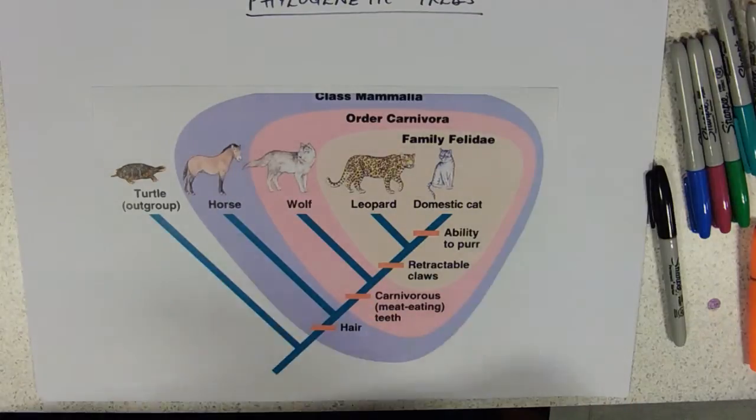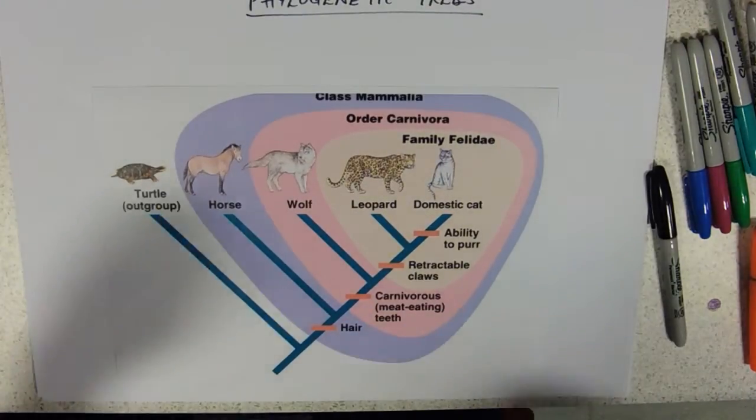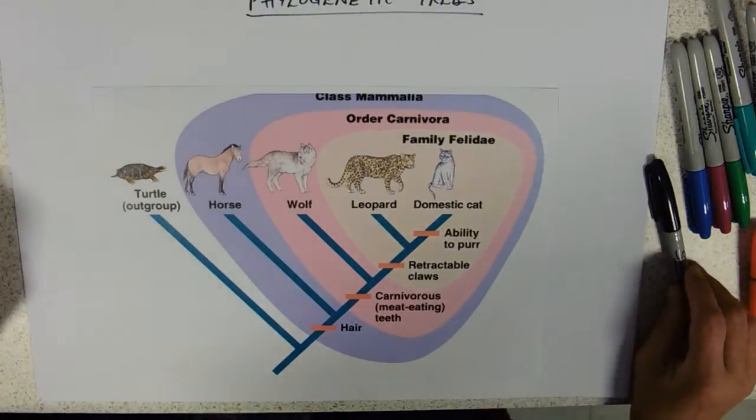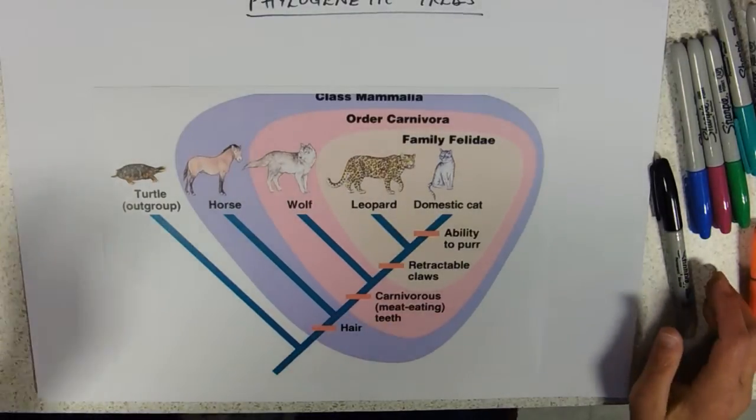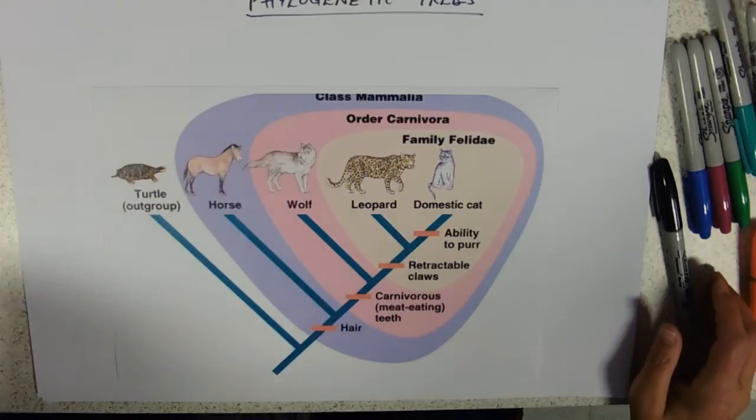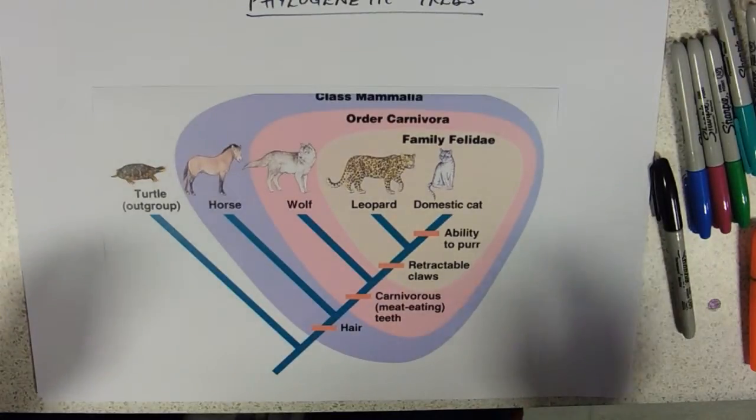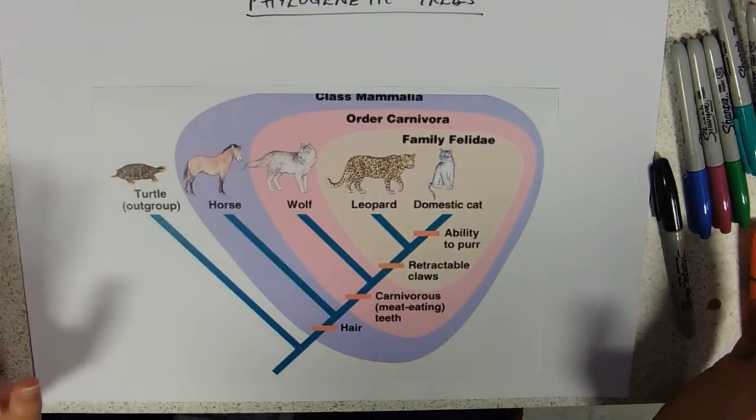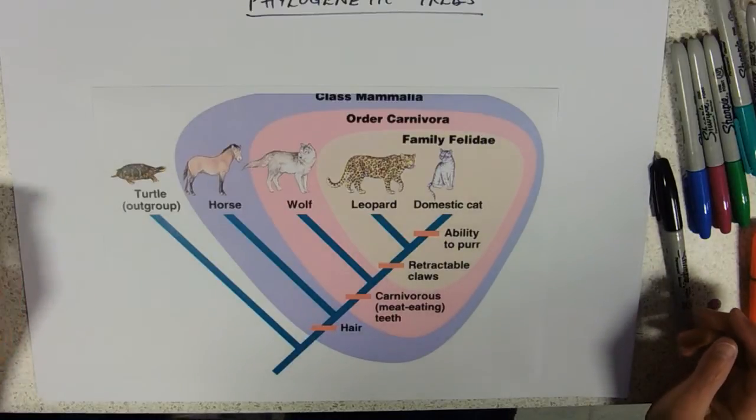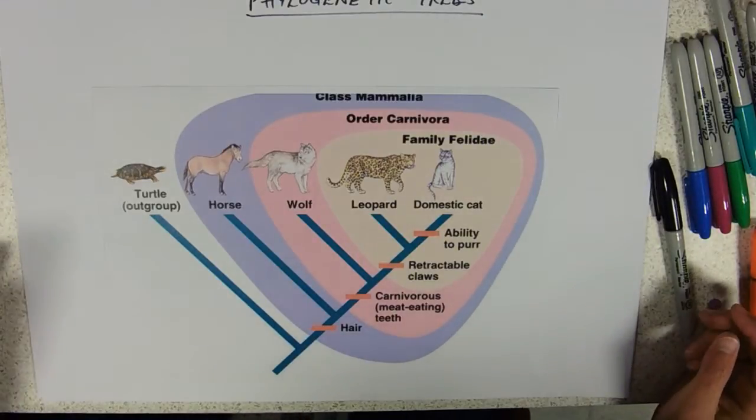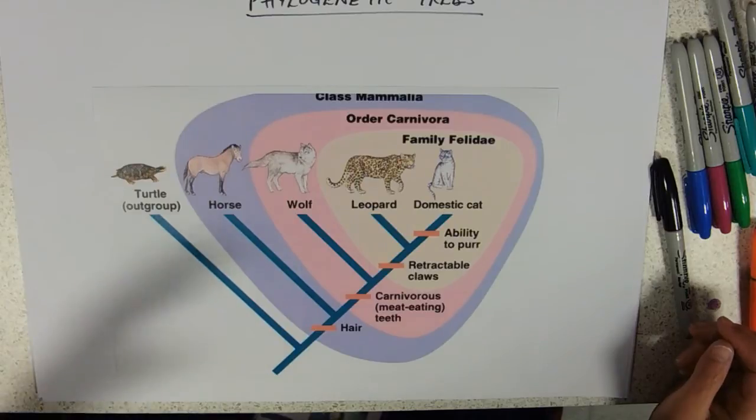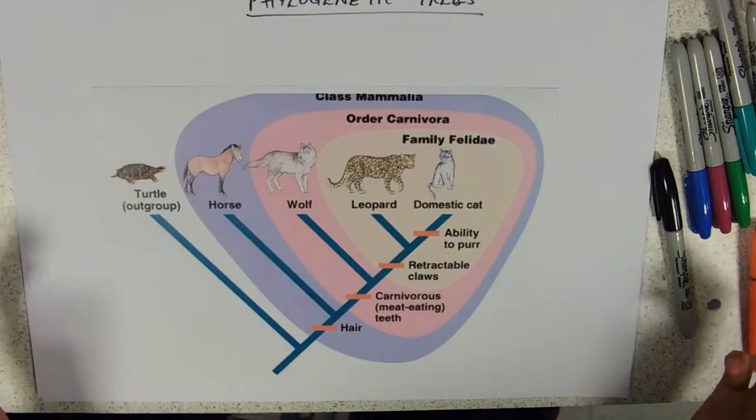Okay, so this is going to be a little video on phylogenetic trees. I love a phylogenetic tree. So, phylogeny. Phylogeny is a way of expressing evolutionary relationships. So classification is pretty much supposed to reflect the evolutionary relationships.